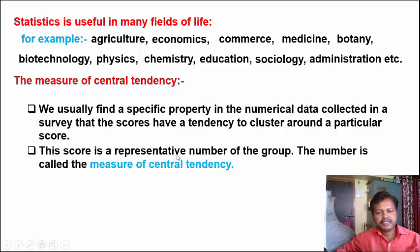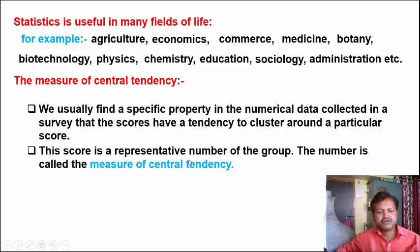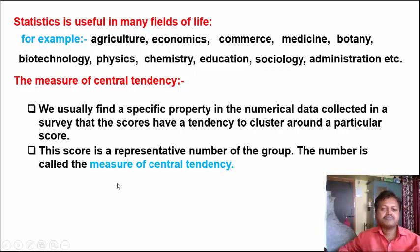This score is a representative number of the group. The number is called the Measure of Central Tendency. The score you find is a representative number of that group, and such a number is called the Measure of Central Tendency - Kendriya Pravrutti chi Parimana.